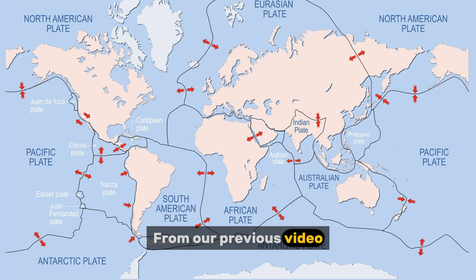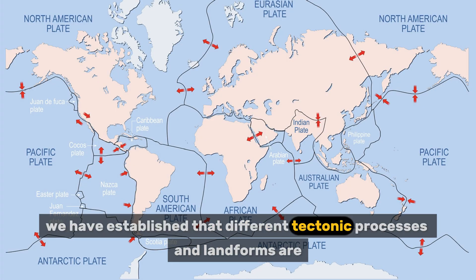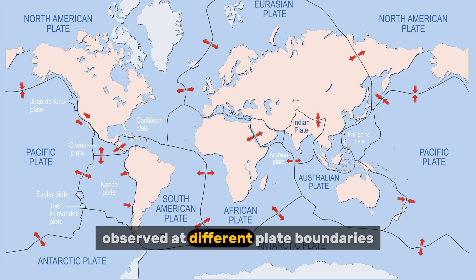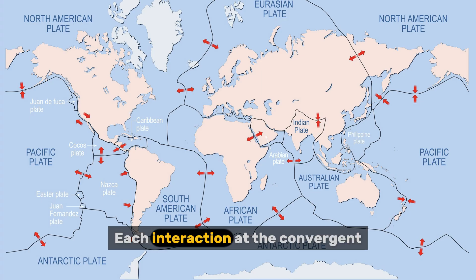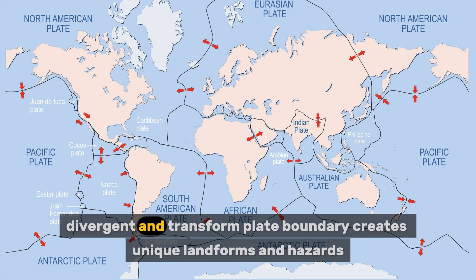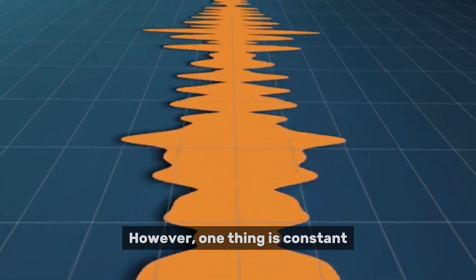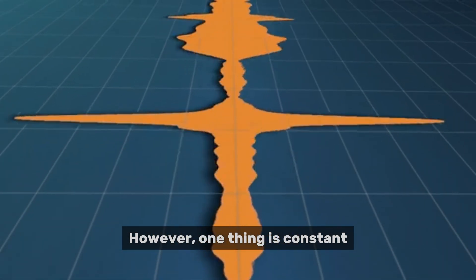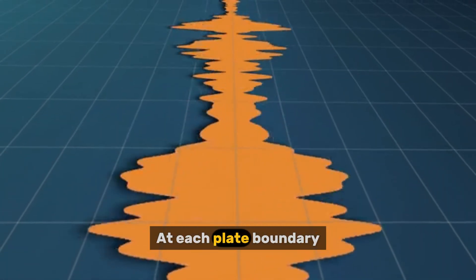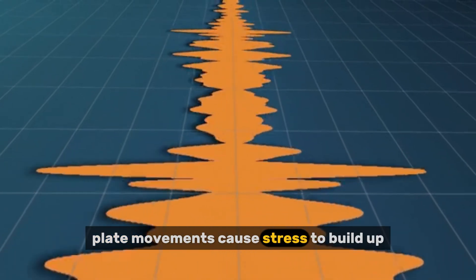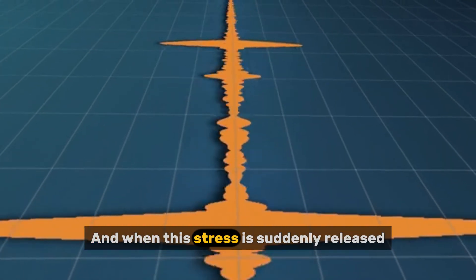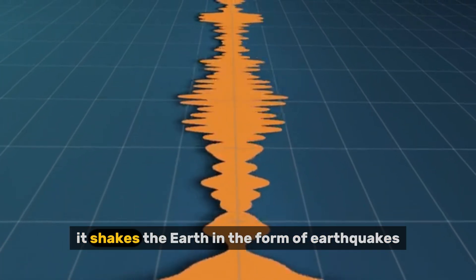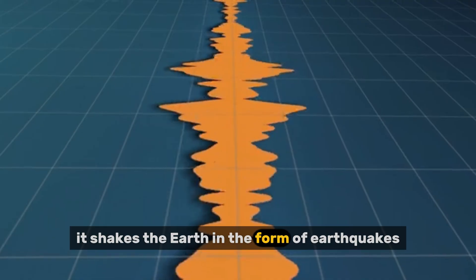From our previous video, we established that different tectonic processes and landforms are observed at different plate boundaries. Each interaction at the convergent, divergent, and transform plate boundary creates unique landforms and hazards. However, one thing is constant: at each plate boundary, plate movements cause stress to build up, and when this stress is suddenly released, it shakes the earth in the form of earthquakes.